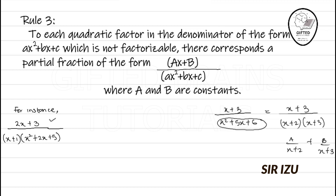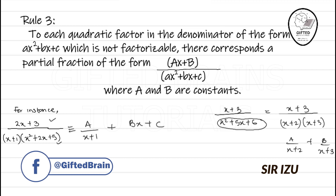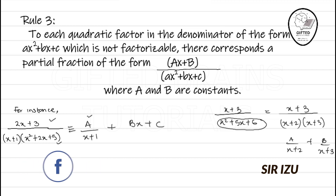We won't divide here because the degree of the numerator is 1 and the degree of the denominator when expanded is 3. For the linear factor x + 1, there corresponds A over (x + 1). Now x² + 2x + 5 is not factorizable, so it gives us Bx + C over (x² + 2x + 5). We use B and C since A has already been used.